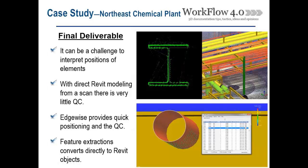With structure, the software uses the laser scan to extract from a database to find your structural member and place it in the model. When doing this by hand, you're interpreting the laser scan and trying to come up with your best fit. Sometimes things are askew, out of plumb, out of level — it's all based upon your interpretation. What ClearEdge Edgewise does is use algorithms to find the best fit based upon the data provided, giving quality control for best-fit documentation.